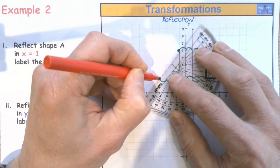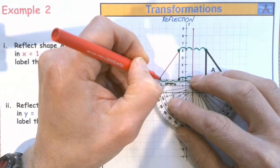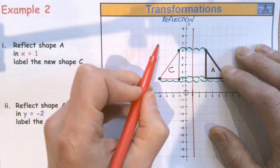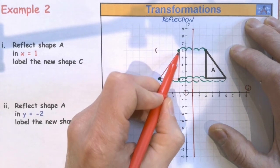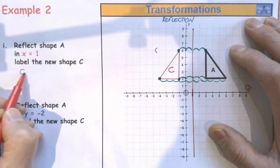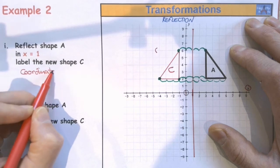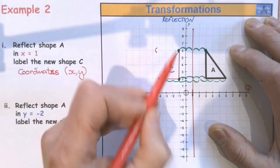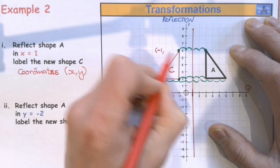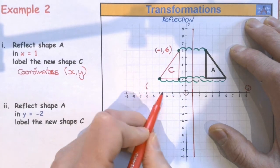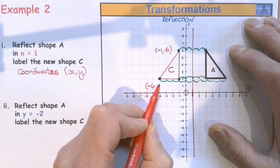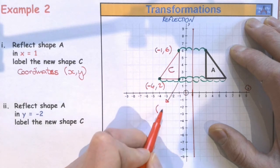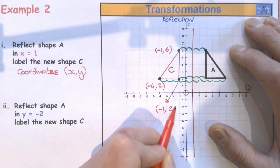So I'm going to draw it on and label it C because that's what it asks. And then I'm probably going to have to give the coordinates of all the points on my new shape. Remember, coordinates are always x, y. So there's my x-coordinate minus 1, y-coordinate 6. This one the x-coordinate is minus 4 and the y-coordinate is 2. And for this one here, my x-coordinate is minus 1 and the y-coordinate is 2.